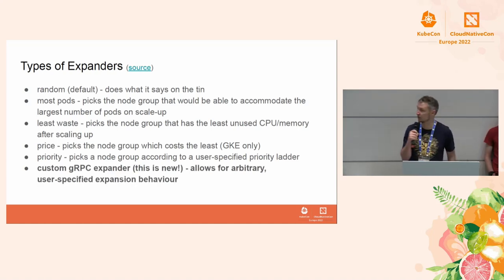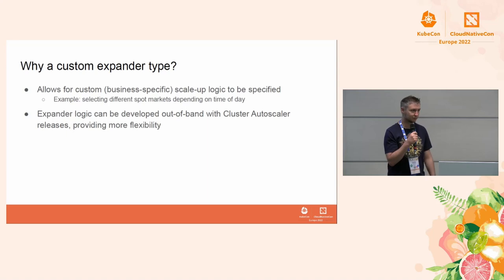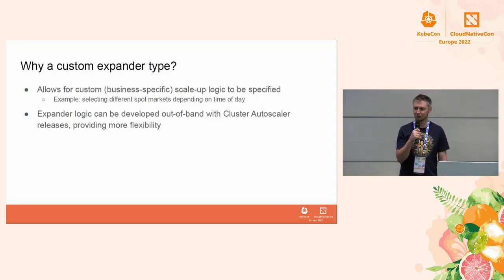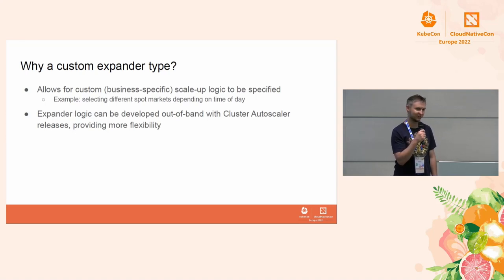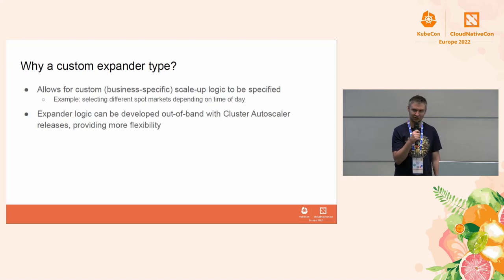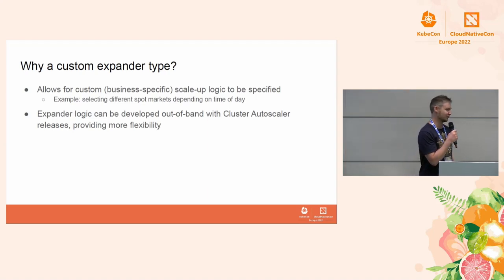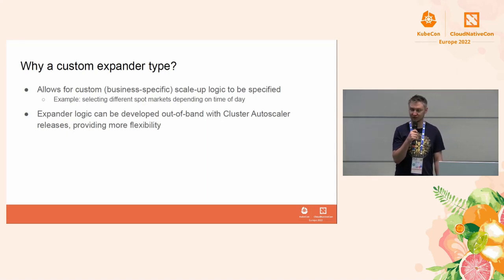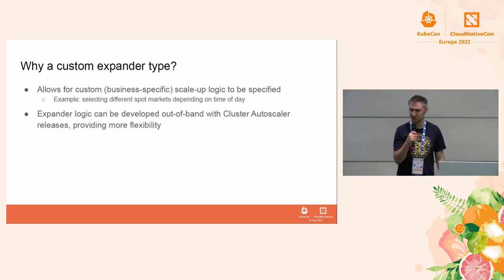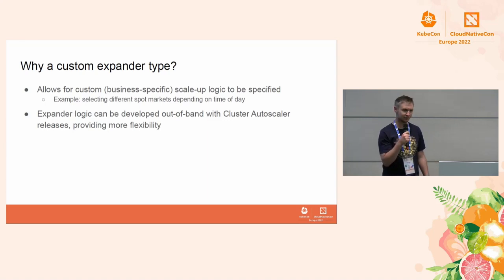The new one we're going to talk about today is the custom gRPC expander. None of the existing expanders quite did what we wanted. We wanted to dynamically change things on the fly — you can kind of do that with the priority expander by updating the config map, but we really wanted more complicated logic. We talked about building a new expander and contributing it upstream, but we couldn't come up with something that would solve our business needs and also be appropriate to upstream. So we settled on the gRPC expander.